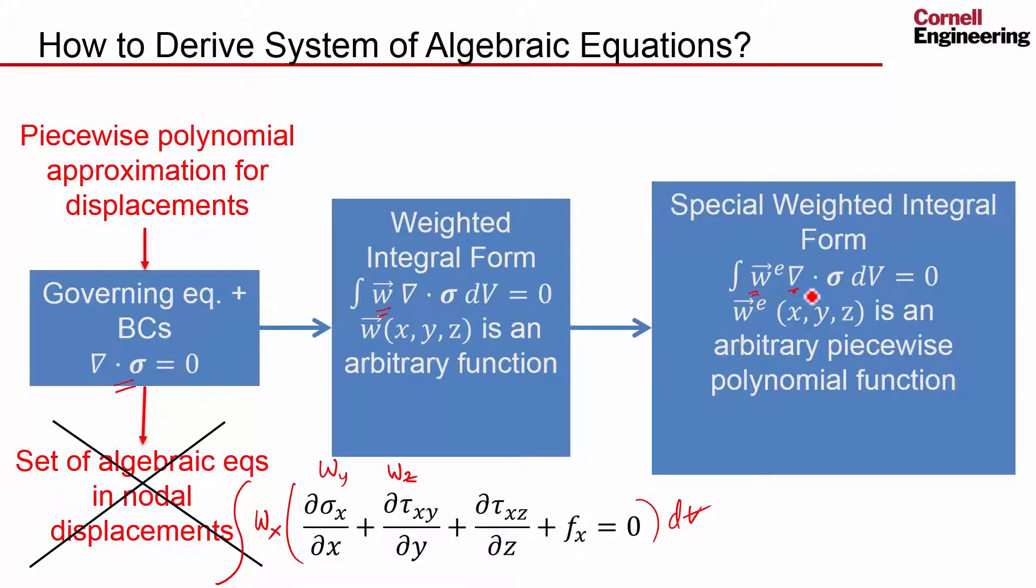The additional complication is our governing equations are not in terms of displacements. If it were in terms of displacements, you could multiply it by the weighting function and it would be a lot easier. Now it's in terms of stresses, which you write in terms of strains, which you write in terms of displacement. So you have all these complicated factors and I'm really glad ANSYS is taking care of the details.